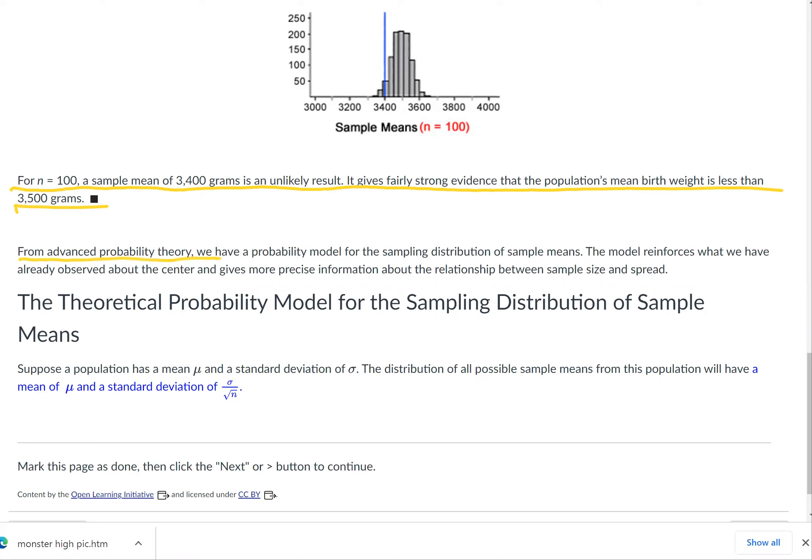From advanced probability theory, we have a probability model for the sampling distribution of sample means. The model reinforces what we have already observed about the center and gives more precise information about the relationship between sample size and spread. The theoretical probability model for the sampling distribution of sample means.